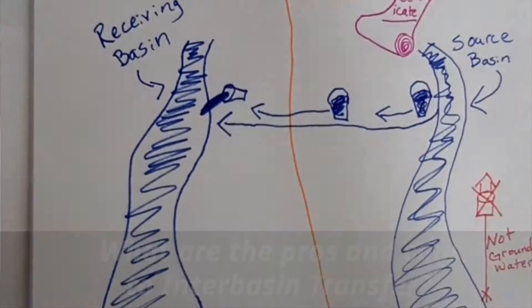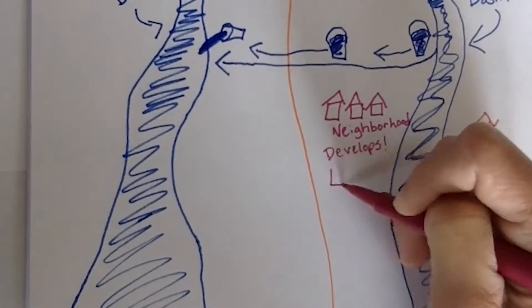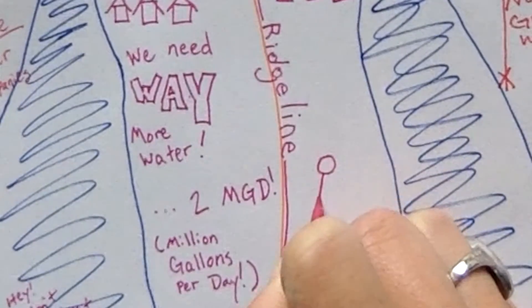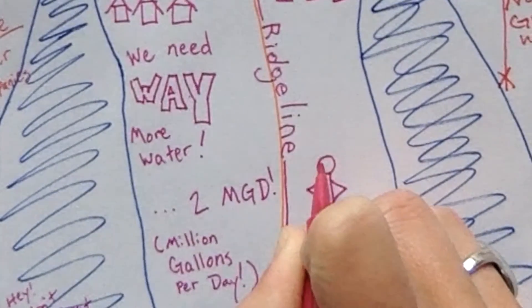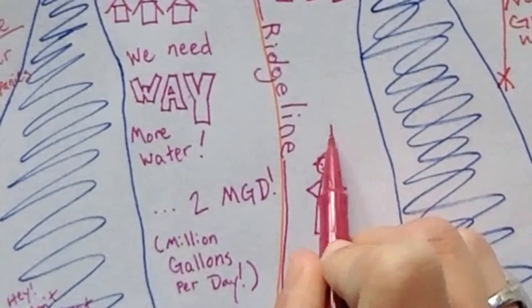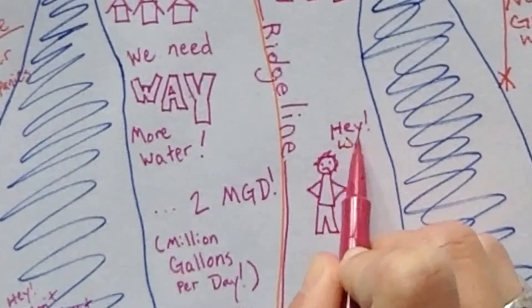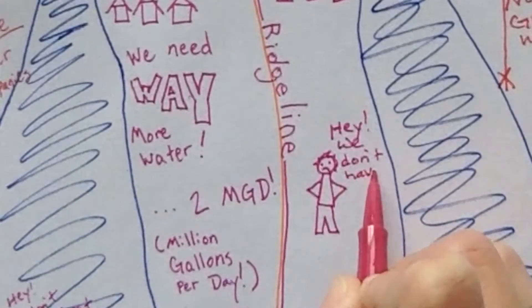Then I asked them to explain the pros and cons of interbasin transfers — both sides of the coin. The process to receive an IBT certificate is very long and complicated and allows people on both sides to give their comments. Some typical issues we run across are in the source basin — a downstream user may be concerned that they've lost some of the water that would have otherwise flowed down to them.